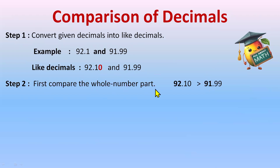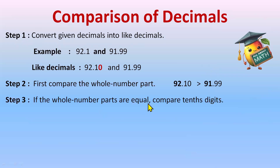Step two: compare the whole part. This is 92 and this is 91. Which is greater? 92 is greater, so 92.10 is the greater decimal. We don't need to check the decimal part. Always remember: compare the whole part first — whichever whole part is greater, that is the greater decimal.